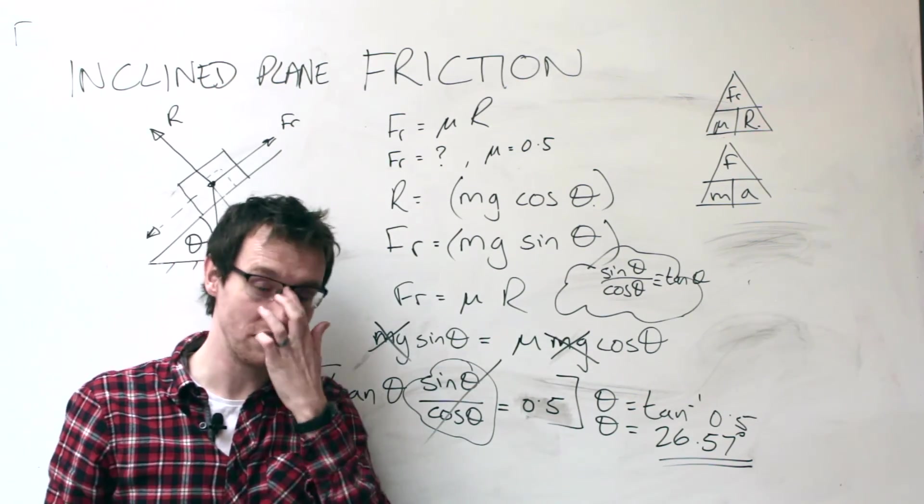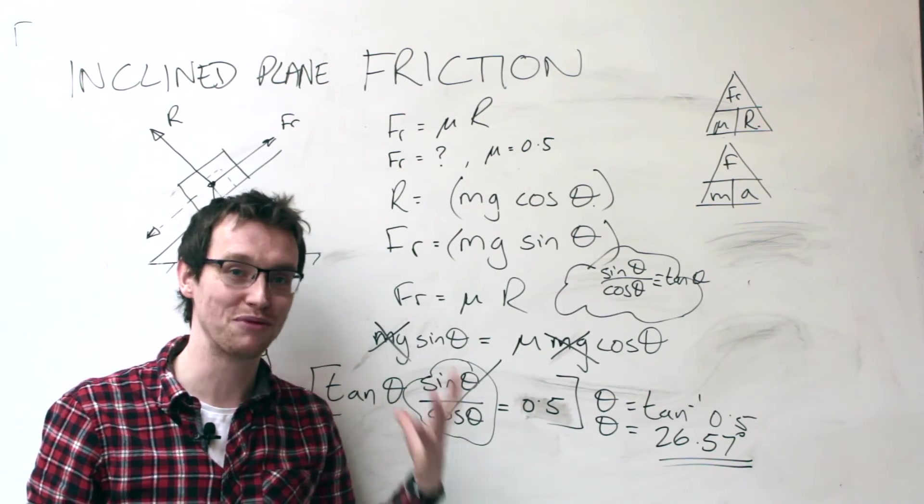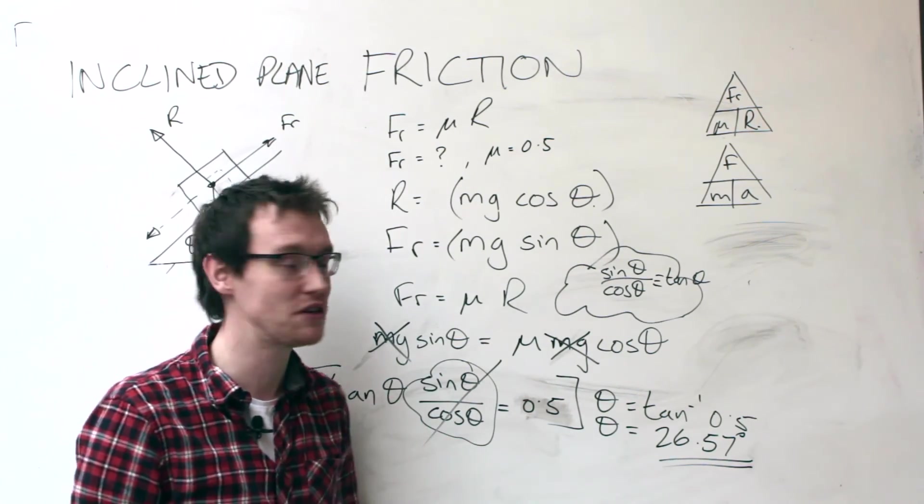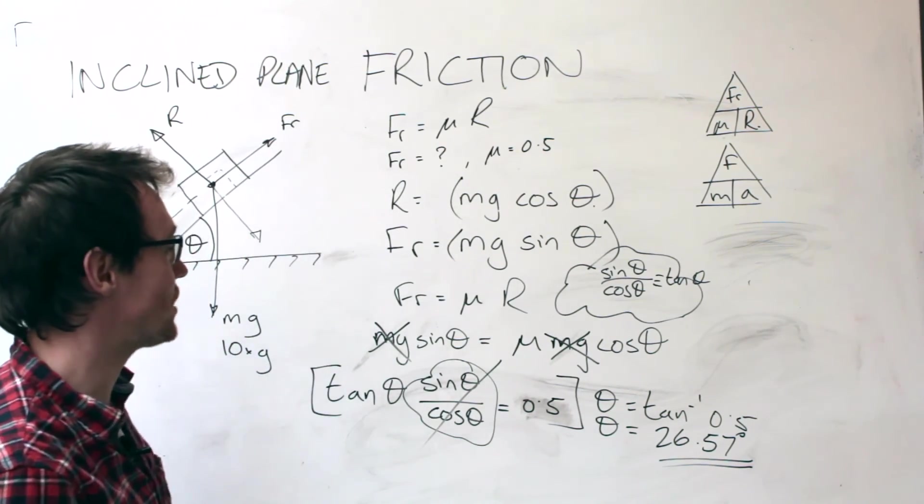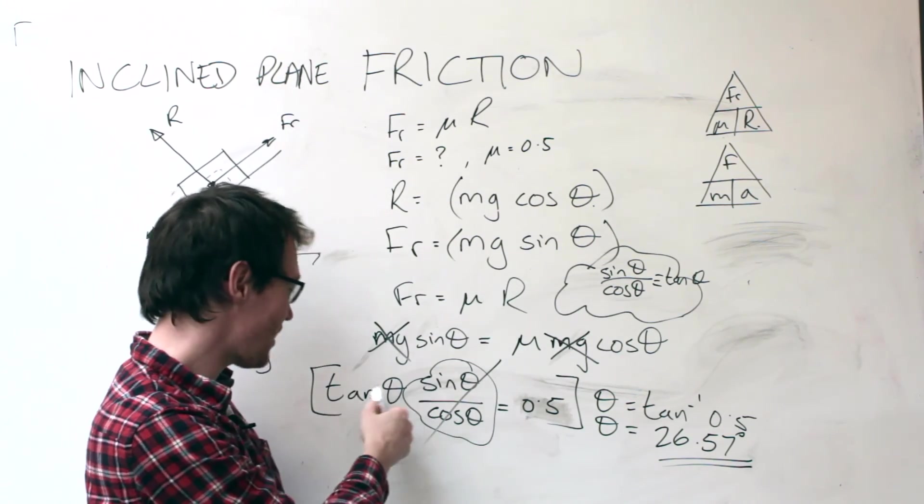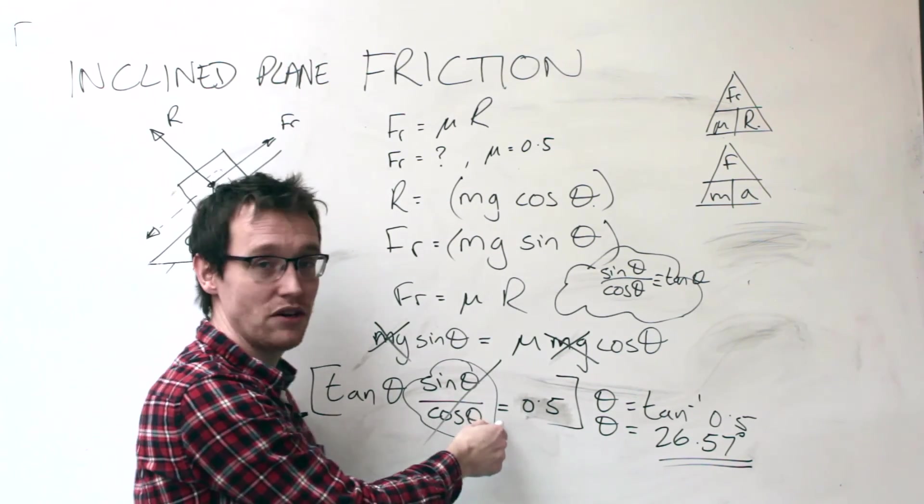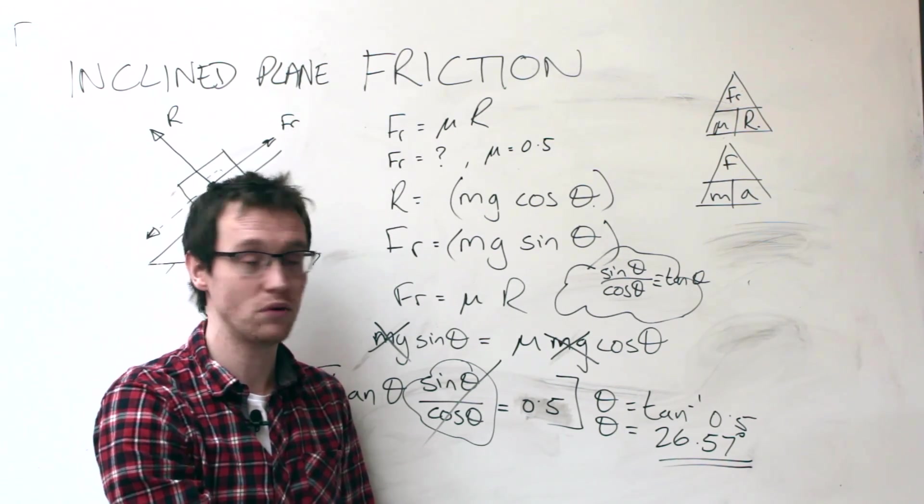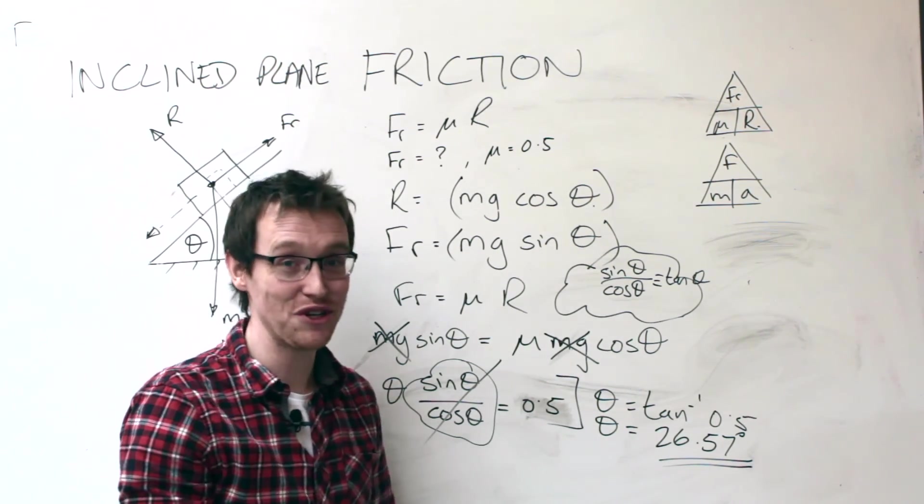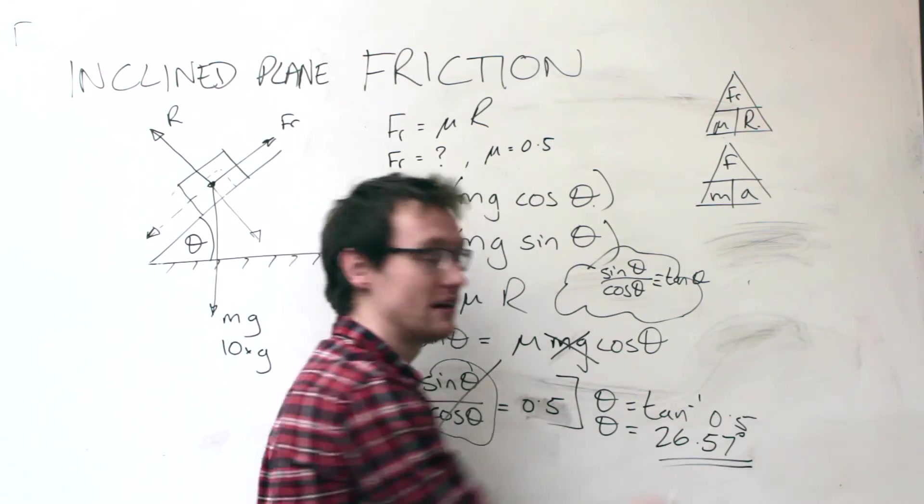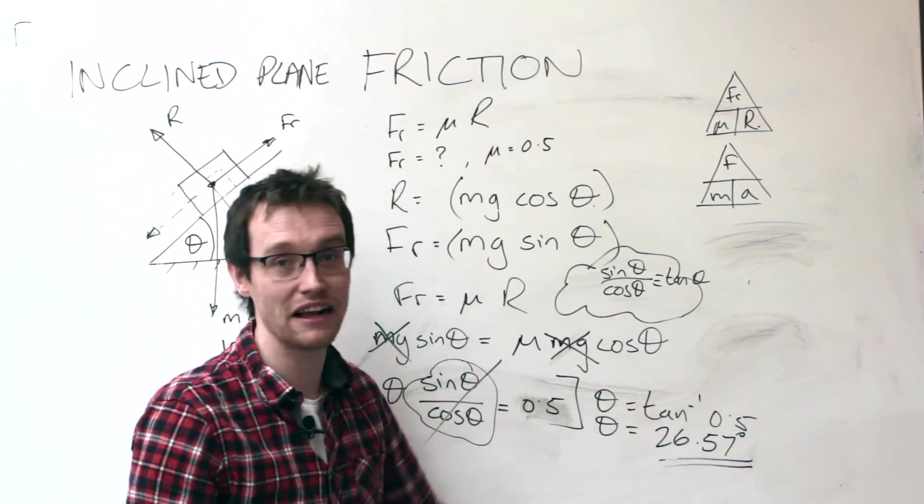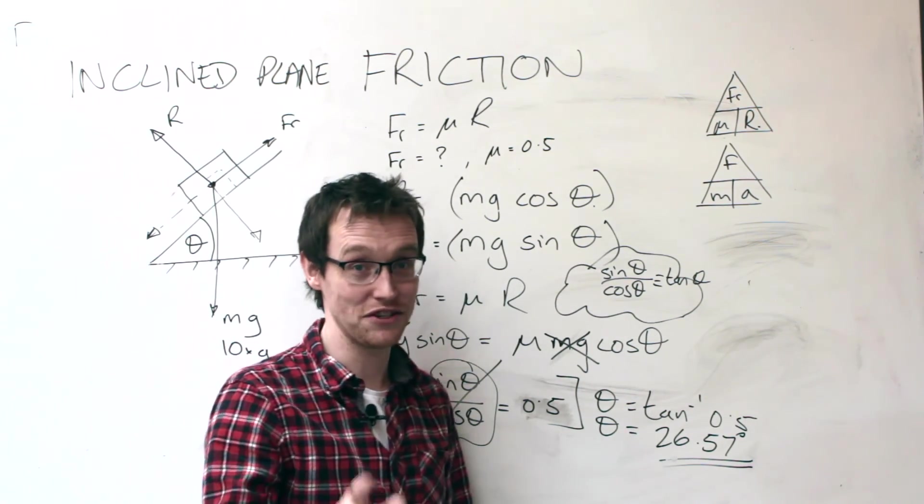Now if you're looking for the shortcut as to how you solve these problems for this particular setup, there is a cheat, and it is very much a cheat because you really should understand how to do this. You'll notice that all of this working for this particular situation will always end up with tan theta equals the coefficient of friction. So if you're going to cheat, then what you can simply do is the inverse tan of the coefficient of friction and you should yield the angle of sliding, but don't tell anyone that is a cheat.